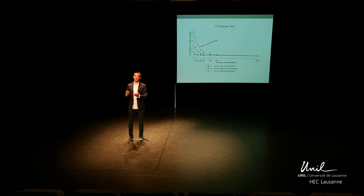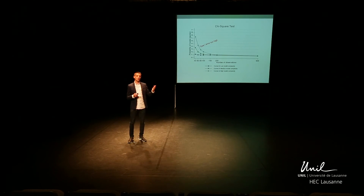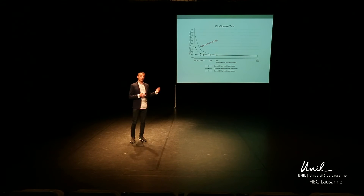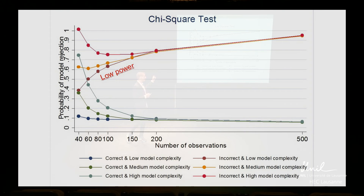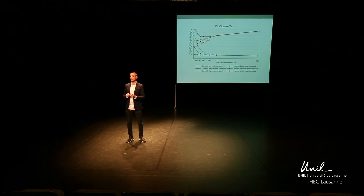So here are our results. Note that each dot represents the probability that the model is rejected, depending on two variables: on the horizontal axis, the number of observations — the sample size — and the different line colors represent different degrees of model complexity. As expected, the chi-square test is biased at small sample sizes and when the model is complex. Also, the chi-square test will lack power to reject incorrect models at small sample sizes and when models are simple.